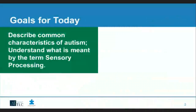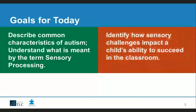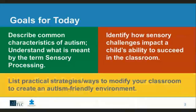Our goals for today: first, to describe common characteristics of autism or ASD — Autism Spectrum Disorders. Also, to understand what is meant by sensory processing. Our second goal is to identify how sensory challenges impact a child's ability to succeed in the classroom. The reason we're talking about ASD and sensory processing together is that studies show sensory differences are more prevalent in children with ASD. The incidence of autism is now one in 68 children.